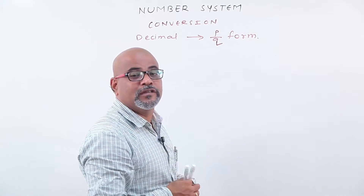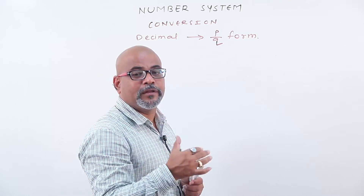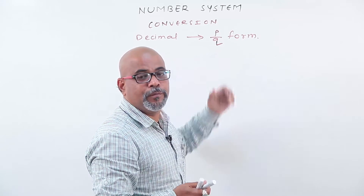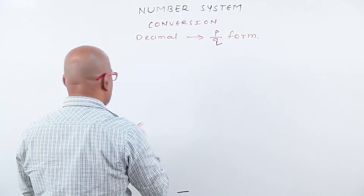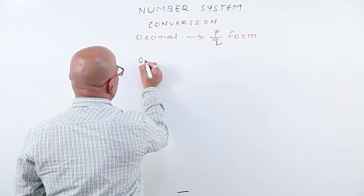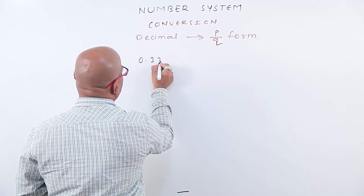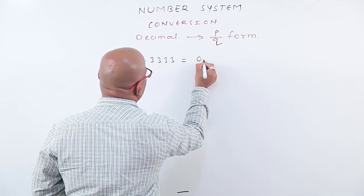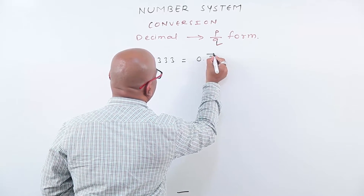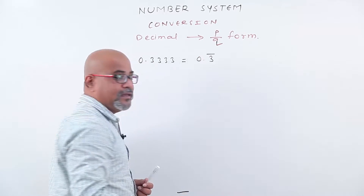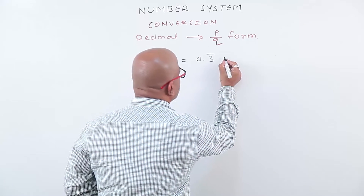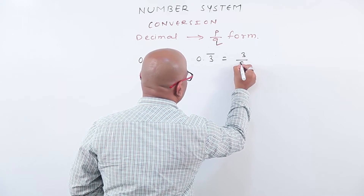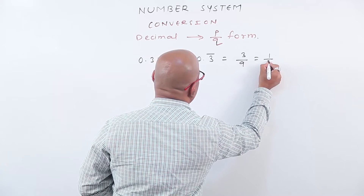Now let us check what is the shortcut method for conversion of decimal into p by q form. Our first number is 0.33333 and so on. Writing in reduced form: 0.3 recurring — I put a bar here. Since one number is recurring, our answer is 3 by 9, that is 1 by 3.